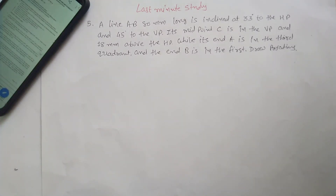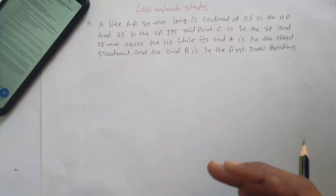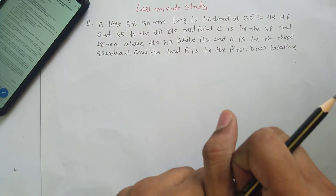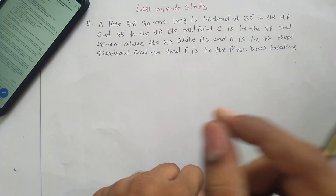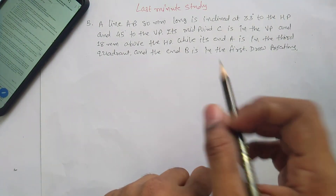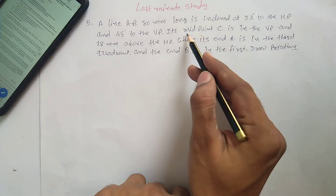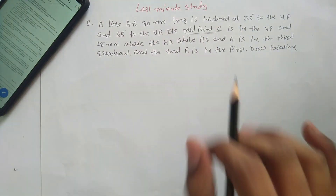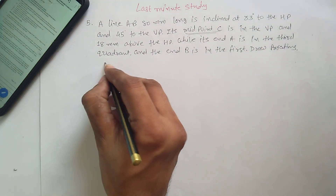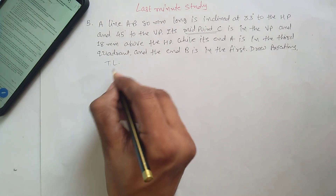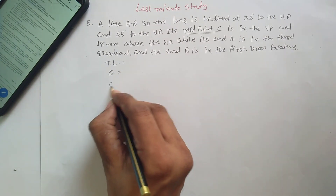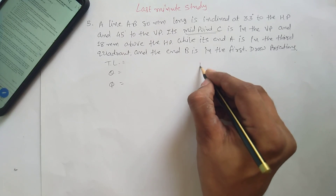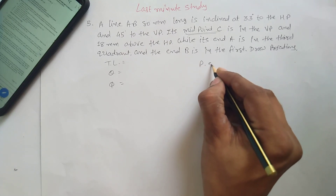Problem number 5 from sheet number 3. In this projection of line problem, one more complexity will be added which is a midpoint C. You have to follow the same rule — find out the true length, theta, phi, and position of endpoints.